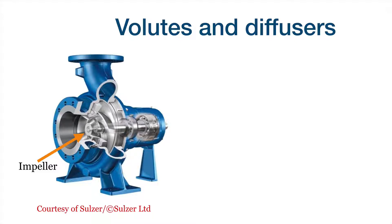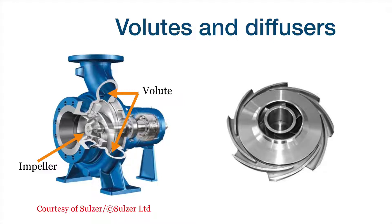We have already seen what a volute was. Here we will see another kind of device to transform velocity into pressure: diffusers. The volute has an area increasing in a spiral shape. The diffuser plays the same role as the volute — the area is increasing along the flow to transform velocity into pressure. Diffusers are normally used in multi-stage pumps, and the volute is normally used in single-stage pumps.